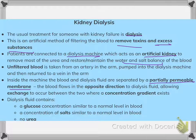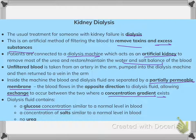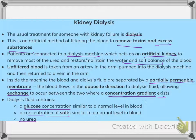The blood flows in the opposite direction to the dialysis fluid, which allows exchange to occur between the two where a concentration gradient exists. The dialysis fluid contains a glucose concentration similar to the normal level in the blood, along with a concentration of salts, and contains no urea. A commonly asked question in the Biology 0625 MCQ is: how many hours does kidney dialysis take? It takes three to four hours and needs to be done several times a week.